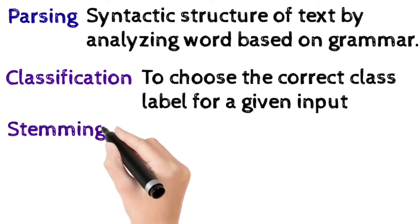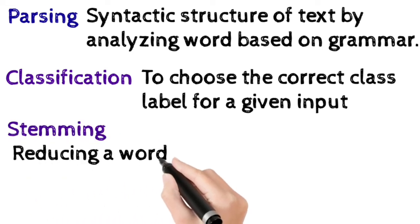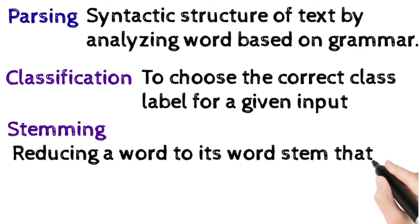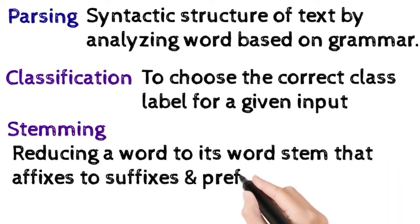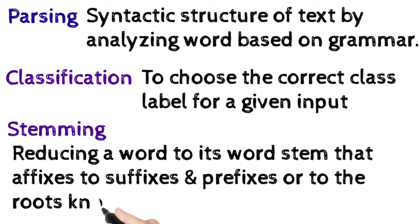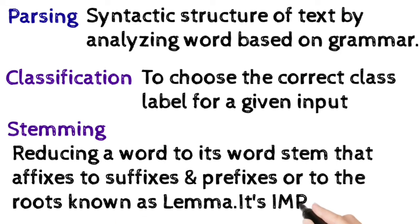Now stemming. Stemming is the process of reducing a word to its word stem that affixes to suffixes and prefixes or to the roots known as lemma. It's important in natural language understanding, NLU. For the machine to understand the input text given by the user, it can use stemming, which reduces the words to its stem so that it can know what are its suffixes and what are its prefixes.